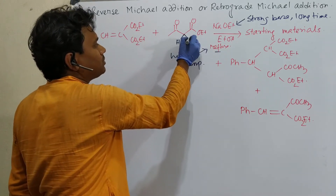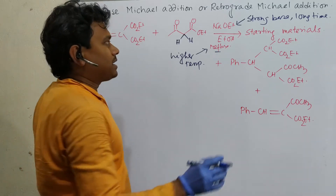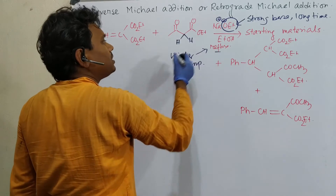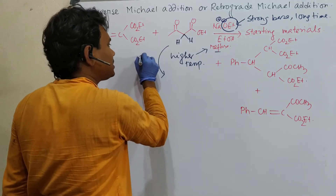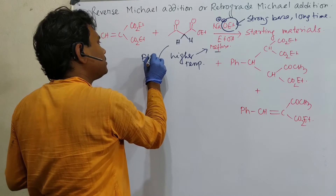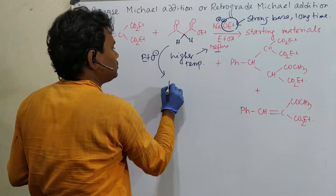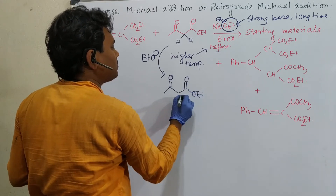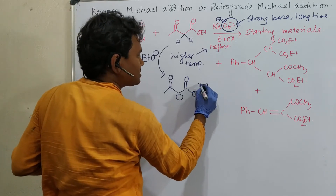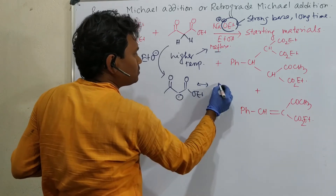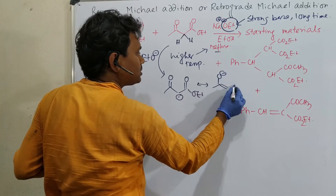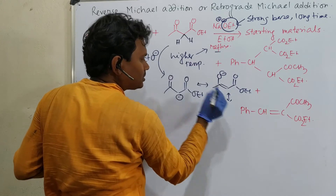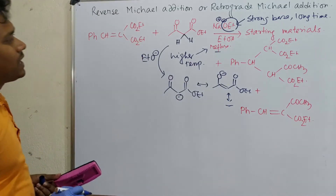This hydrogen is fairly acidic and it can be abstracted by the ethoxide anion. So the ethoxide can abstract this proton and result in the generation of a carbon-based, softer nucleophile — a carbanion. This carbanion, with charge O minus, is resonance-stabilized; the charge can be delocalized here, giving another resonance form.